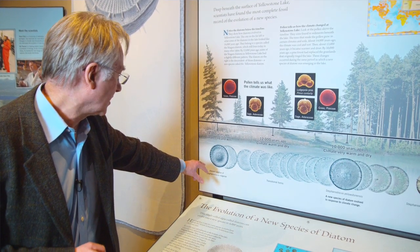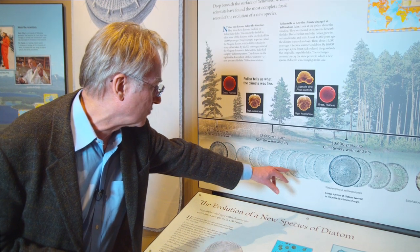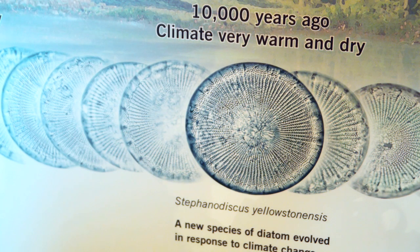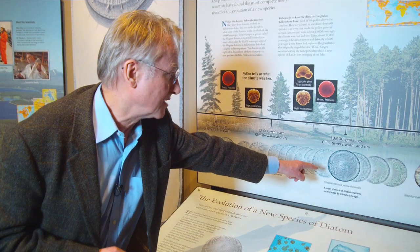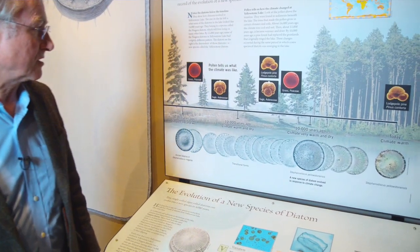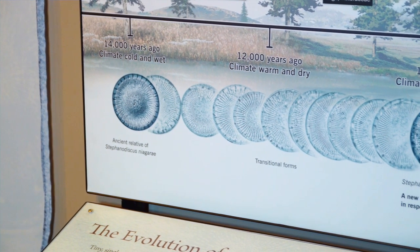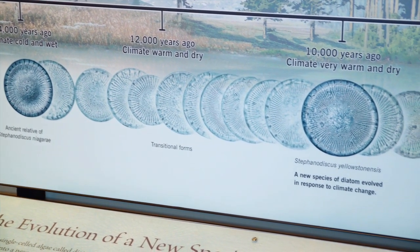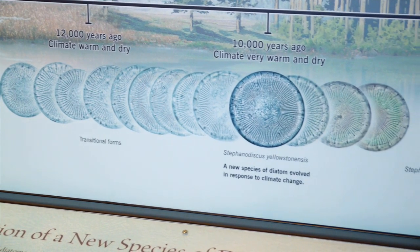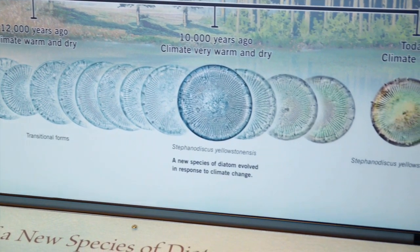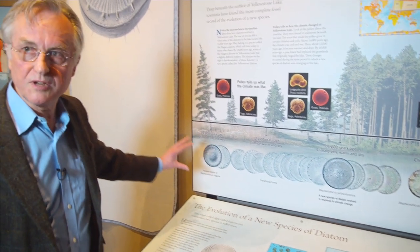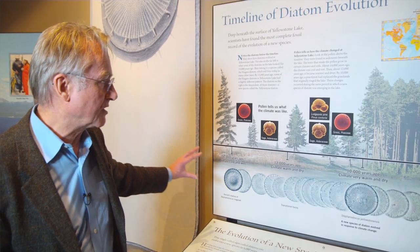Stephanodiscus niagara gradually changes through all these transitional forms. At about 10,000 years ago, it becomes recognisable as Yellowstoneensis, going on to today where it is Yellowstoneensis. These are definitely two different species. The differences between them are quite subtle — you have to find out by counting ribs and spines. As you go along this timeline, you see the change gradually occurring. This is a perfect example of intermediates in the fossil record showing the complete history of the evolution of a new species.